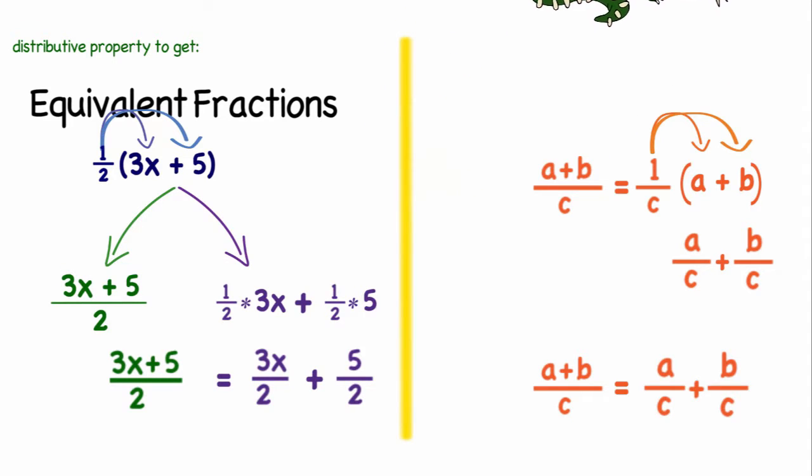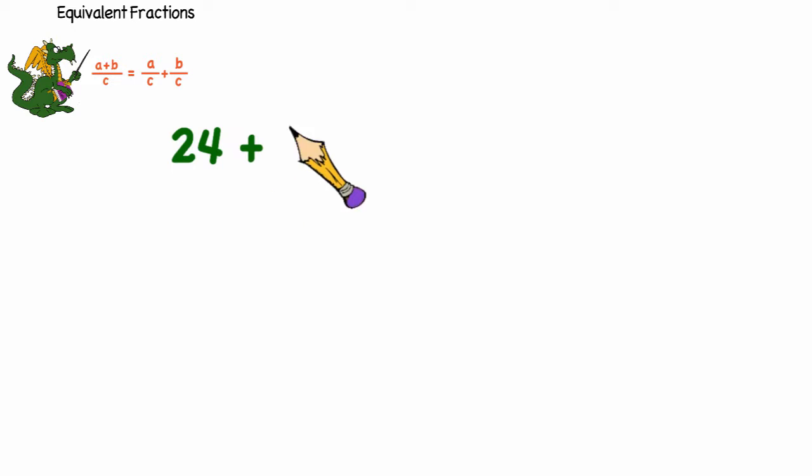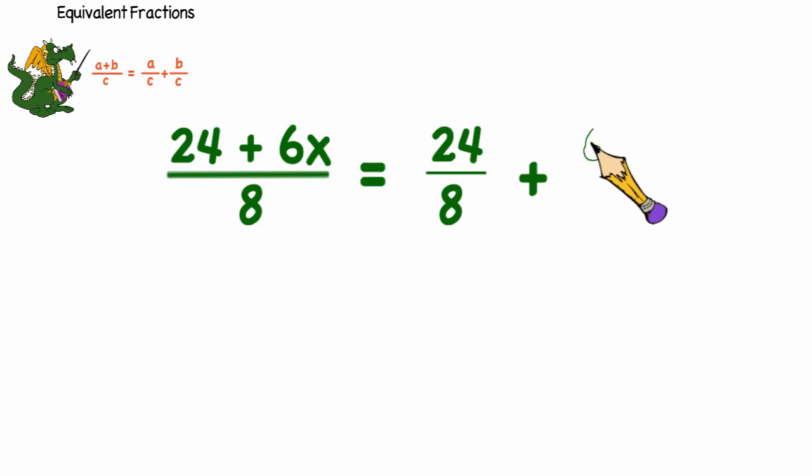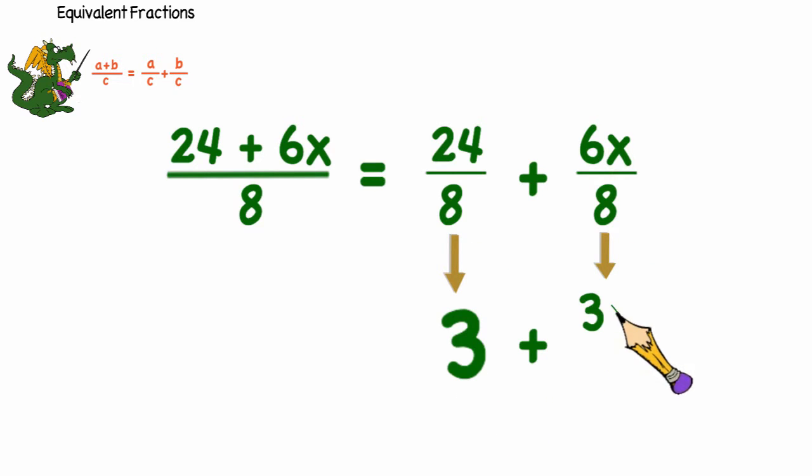So let's look at two examples. If I have 24 plus 6x over 8 I can rewrite that as 24 over 8 plus 6x over 8. And when I simplify that I get 3 plus 3x over 4.